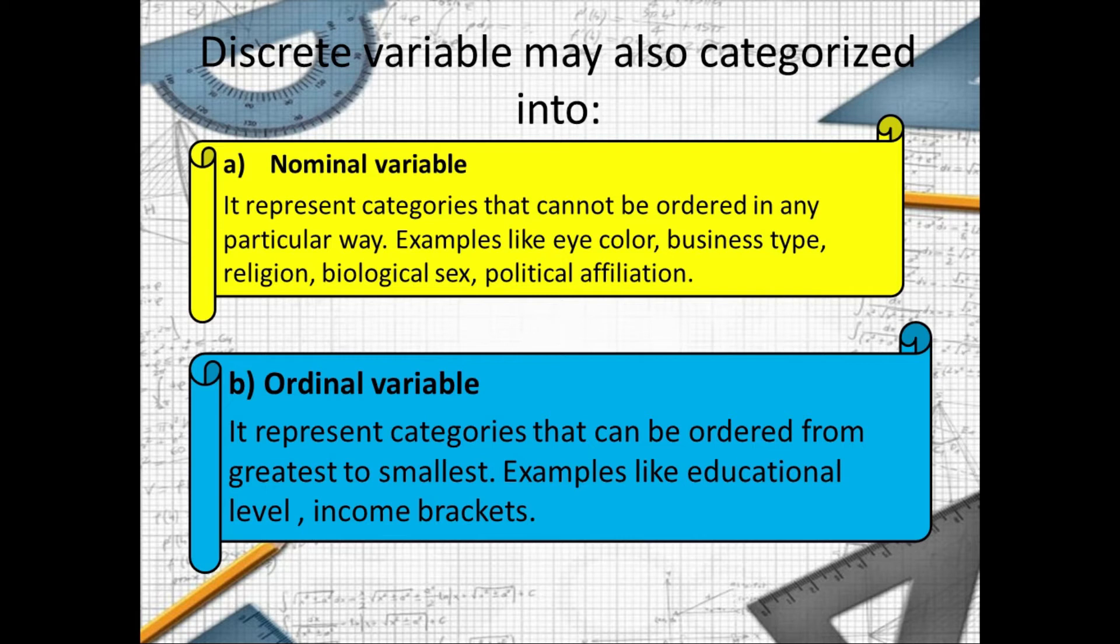And also we can create order in brackets. Let us say 10,000 to 15,000 is one, 16,000 to 20,000 is two, 21,000 to 25,000 is three, 26,000 to 30,000 is four.